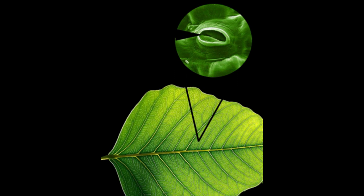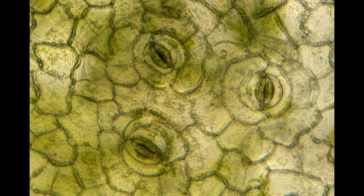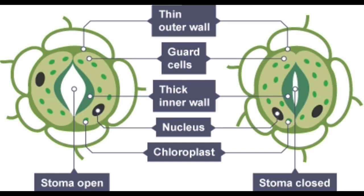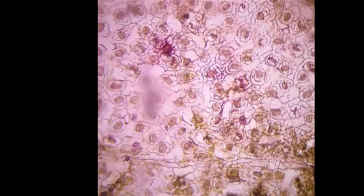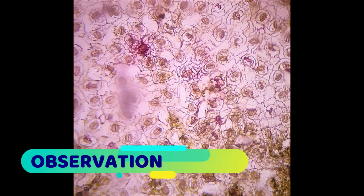Stomata are the microscopic pores present in the epidermis of leaves and young shoots of plants. They are chiefly concerned with the exchange of gases during photosynthesis and respiration. Stomata are also responsible for the loss of water through transpiration.